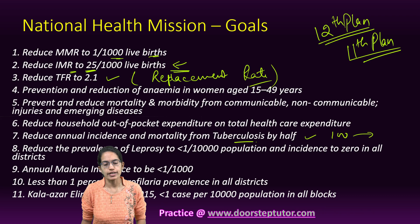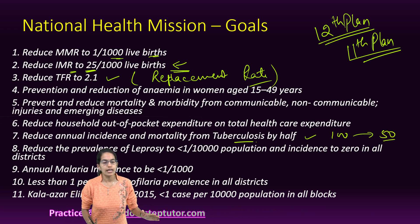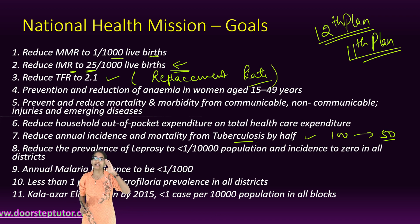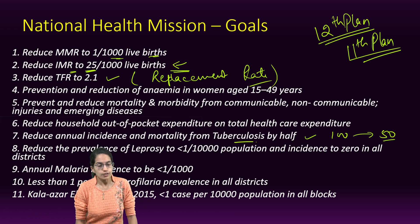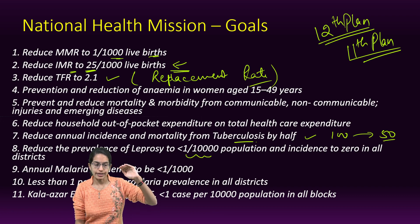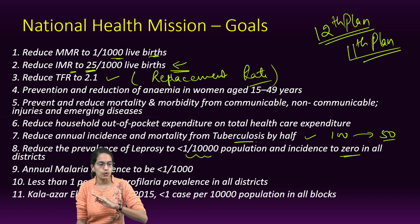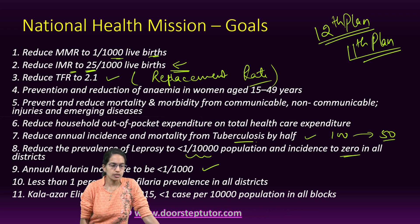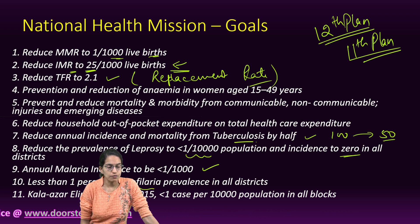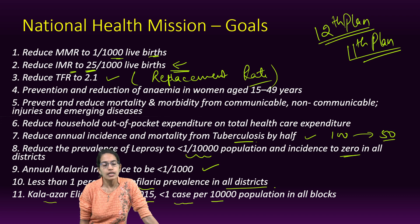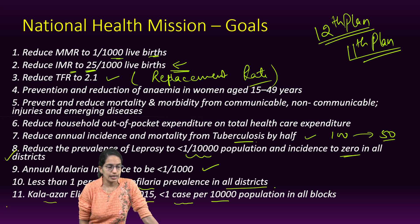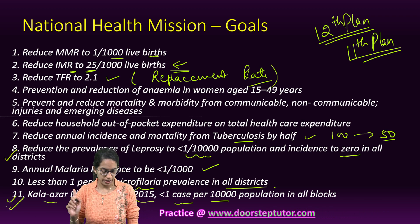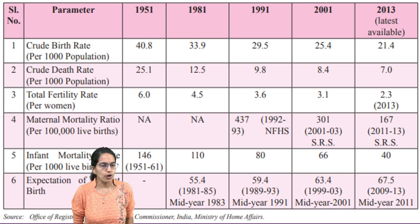The prevalence of leprosy should be reduced to less than 1 per 10,000 cases, with an incidence of zero in all districts. Annual malaria incidence should be less than 1 per 1,000, microfilaria rate less than 1 in all districts, and kala-azar to be eliminated by 2015 at less than 1 per 10,000 cases. Reduction in leprosy and kala-azar has been significantly important.